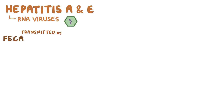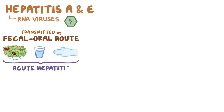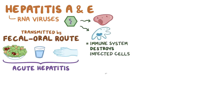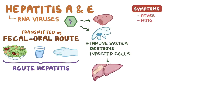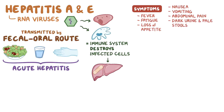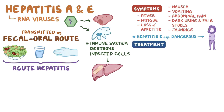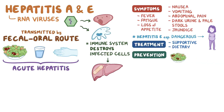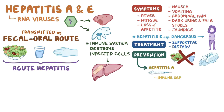As a quick recap: hepatitis A and E are RNA viruses transmitted by the fecal-oral route through contaminated water, food, or dirty hands that usually cause acute hepatitis. They infect hepatocytes and Kupfer cells, and the immune system destroys infected cells, causing liver damage. Symptoms include fever, fatigue, loss of appetite, nausea, vomiting, abdominal pain, dark urine and pale stools, and jaundice. Hepatitis E is especially dangerous to pregnant individuals. Treatment is usually supportive and dietary. Both can be prevented by avoiding potentially contaminated food and water and through regular hand-washing. Hepatitis A can also be prevented through vaccination or immune serum globulin.